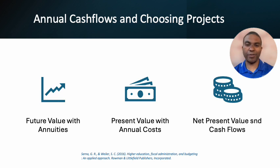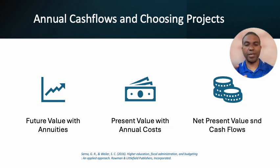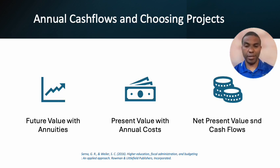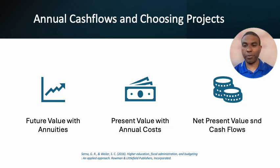Now let's talk about annual cash flows and choosing the projects you're actually going to do. The chapter goes through Excel spreadsheets and discusses future value with annuities, because institutions probably have money set aside in investments — similar to a savings account that earns interest over time. You can calculate the future value based on the interest rate. They also cover present value with annual costs. For example, comparing computer A versus computer B — it might seem like the cheaper computer makes more sense, but if it has higher maintenance costs, the more expensive computer could actually be the better deal in the long run.